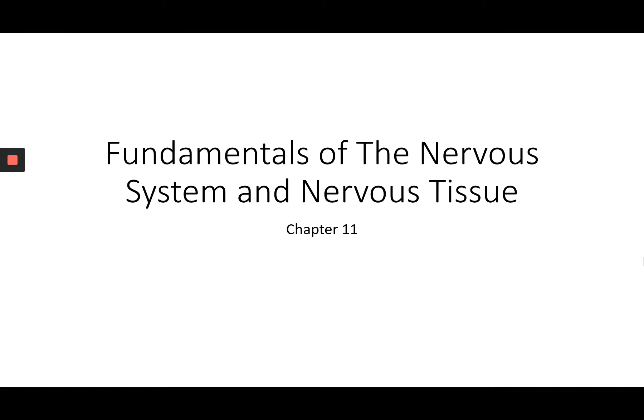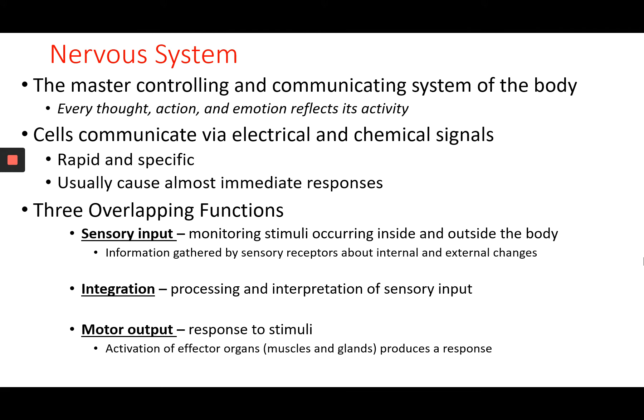Today we're going to look at the fundamentals of the nervous system and nervous tissue — this is chapter 11, and we'll go through it in three parts. The nervous system, along with the endocrine system which we'll cover in anatomy and physiology two, is the master controlling and communicating system of the body.